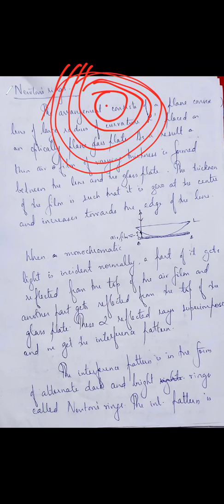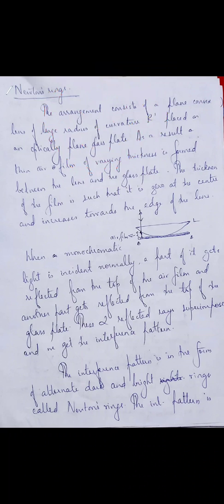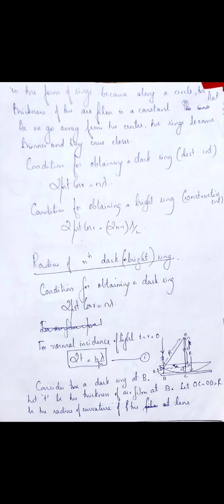Why do you get the interference pattern in the form of rings? It is because along a circle the thickness of the air film is constant. As you go away from the center, the rings become thinner and they come closer to each other.